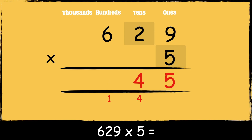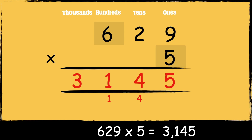Now we multiply five by six hundreds: five times six is thirty, add the one hundred gives thirty-one. So the answer is three thousand one hundred and forty-five.